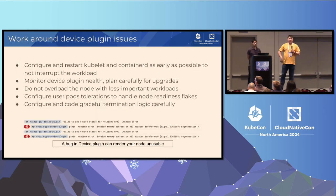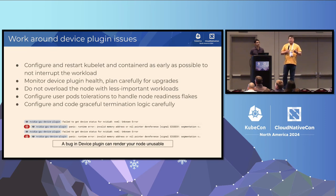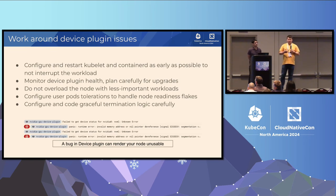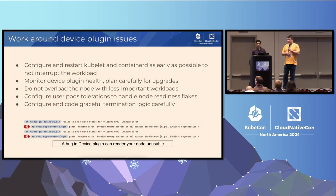Best practices today: configure kubelet ahead of time before scheduling device-related pods. Monitor device plugin health — if you have a problem and don't know where to look, check if the device plugin was evicted. Try not to run too many things on the node; yes, you have wasted CPU, but using it all risks evictions and instability that wastes valuable hardware time. One real support case involved a device plugin crashing and failing to detect a device, ending up in a cycle of deleting and recreating the node repeatedly.